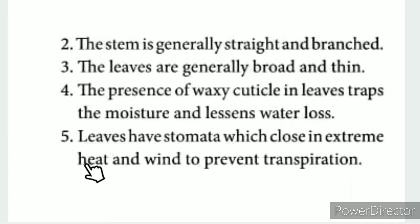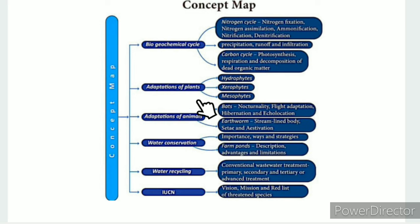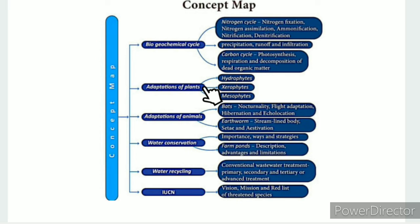The leaves have stomata which close in extreme heat and wind to prevent transpiration. Mesophytes are adapted to conditions that are not too wet nor too dry. In our next video, we will cover the adaptation of animals. Thank you.